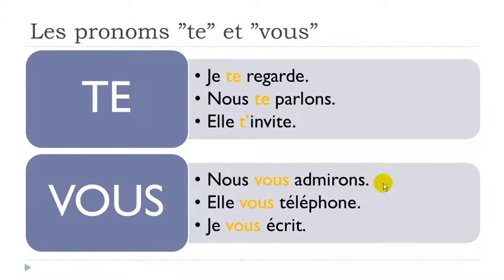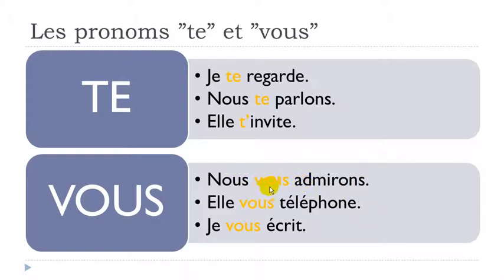You should really be careful because a common mistake is usually to look at the order of the sentence — nous vous admirons — and think that just because vous is before the verb, it must be the subject. It's not. In that case nous is the subject: nous admirons — we admire you, nous vous admirons.